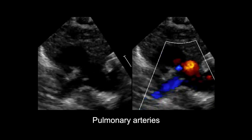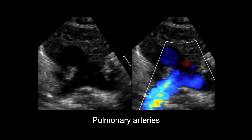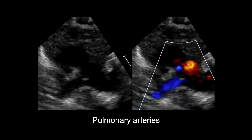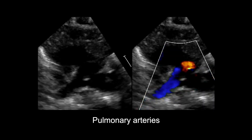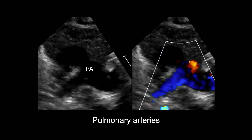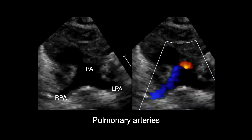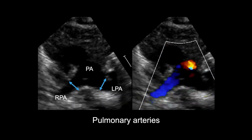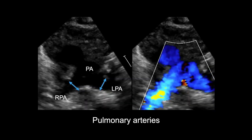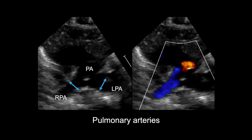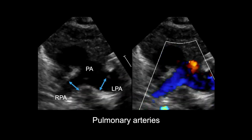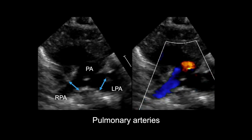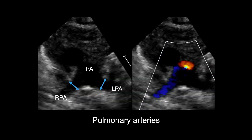Next, the size of the branch pulmonary arteries are assessed as they have a potential of becoming stretched or narrowed following the Lecomte procedure. The pulmonary artery and the right and left branch pulmonary arteries can be measured in their widest dimension. The branch pulmonary arteries in this example are good size with laminar flow, and flow from the PDA into the pulmonary artery can also be seen in this view.